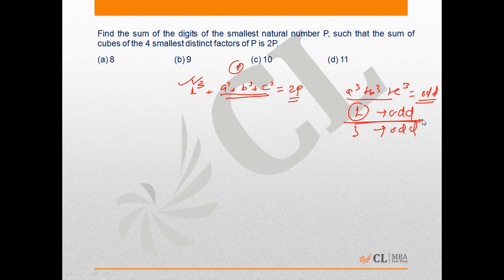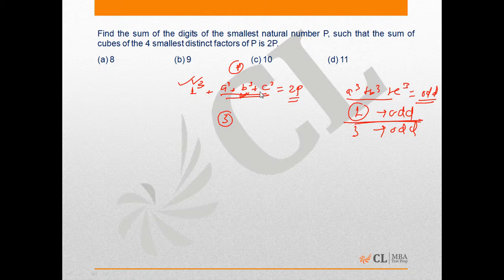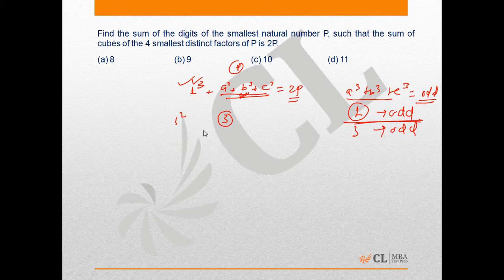So consider the first case when one out of these three numbers is odd. The next smallest odd factor of any number can be 3, so assume the value of B to be 3. And as we have to keep the number as small as possible, suppose the other two even factors are 2 and 4.